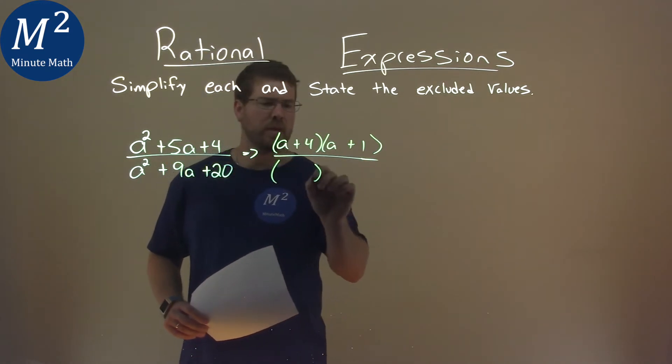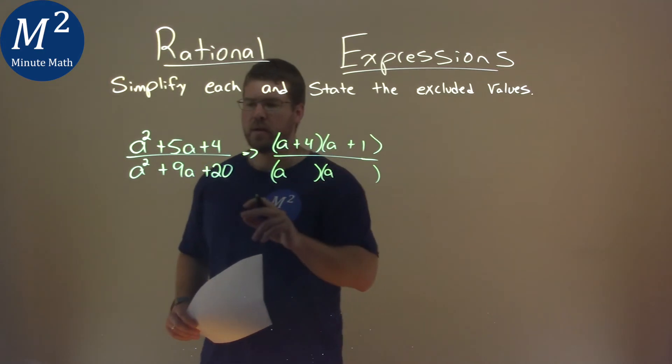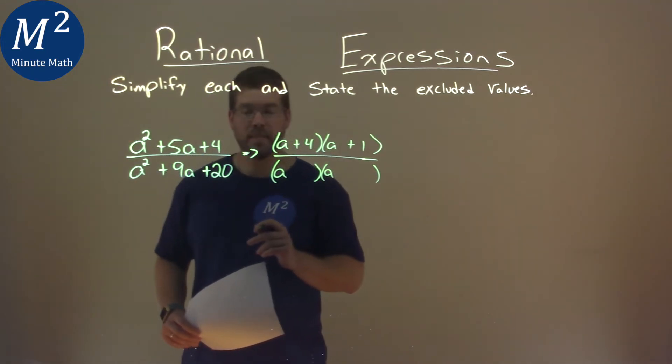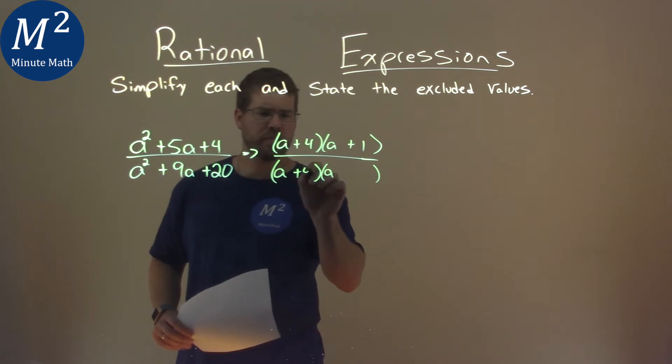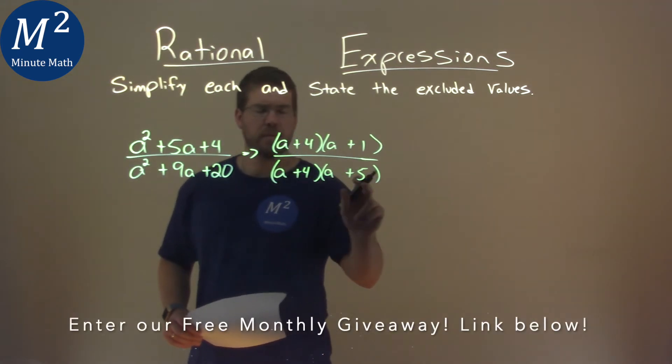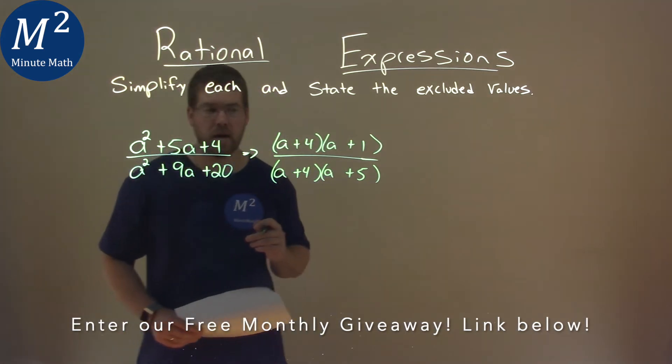We do the same thing with the denominator. What two numbers multiply to be positive 20 but add to be 9? That is 4 and 5. 4 times 5 is 20, and when we add the two we get 9.